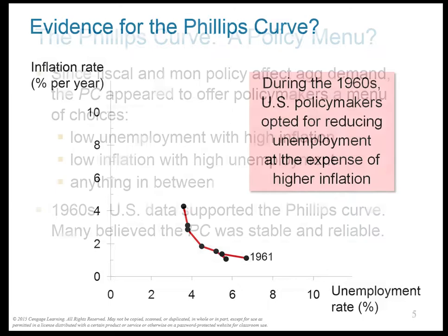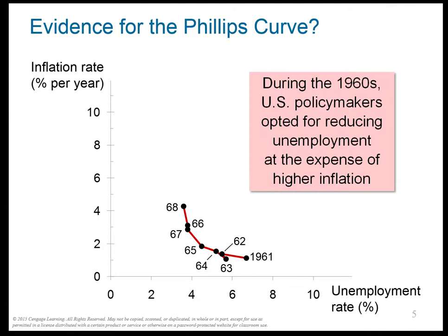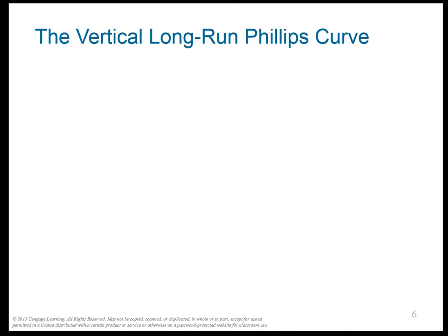In the 1960s, the data supported the Phillips curve, and most people believed it was stable and reliable. From 1960 to 1968, we see perfect tracing — downward sloping with inflation rate and unemployment rate on the two axes. Policymakers started in 1961 and then moved through the 1960s pumping up the AD curve, which in the ASAD model makes inflation go up and unemployment go down.